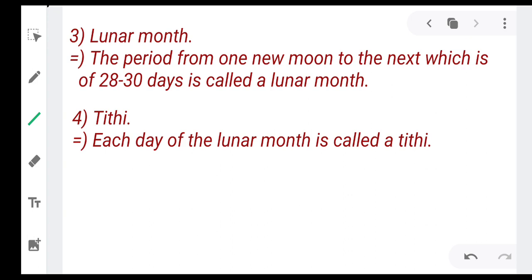Now third one, lunar month. The period from one new moon to the next which is of 28 to 30 days is called a lunar month.